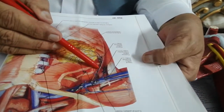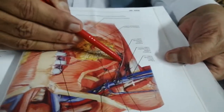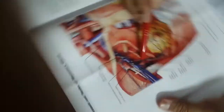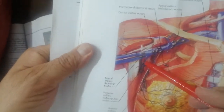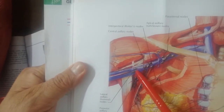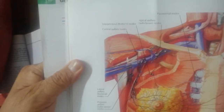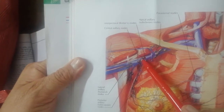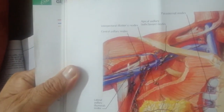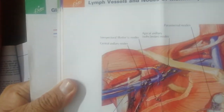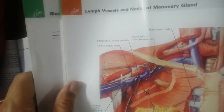Looking at the medial wall: these nodes visible here form the anterior or pectoral group. This group along the subscapularis is the posterior or subscapular group. This group which lies along the axillary vein is the lateral or humeral group. The group in the center is the central group. And those lying highest of all are called the apical group of axillary lymph nodes.